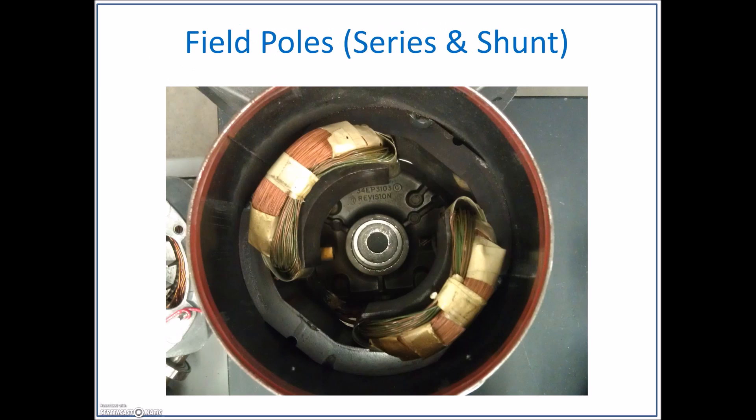Now, if we go back to that slide that we had our field poles on, we can see here that on the outside we have the shunt. So this guy right here is our shunt winding. We know it's the shunt winding because it has a smaller gauge of wire and a lot of turns. And then this winding right here is the series.